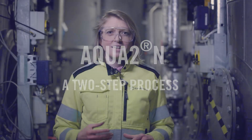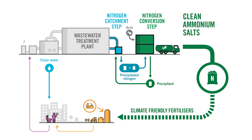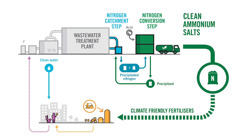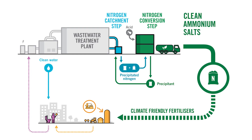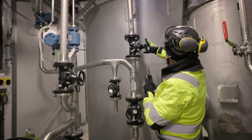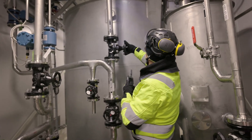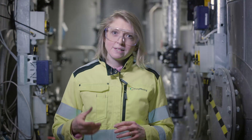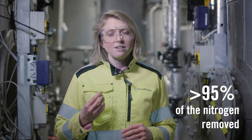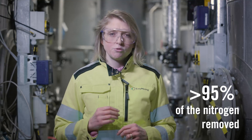Aqua 2M is a two-step process. First the nitrogen is removed from the wastewater by adding a precipitant — magnesium phosphate — that catches the nitrogen in the water. We thereafter separate the precipitated nitrogen from the treated water. The treated water is led back to the wastewater treatment plant again with more than 95% of the nitrogen removed.